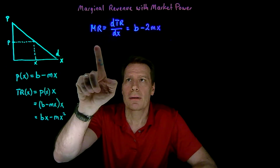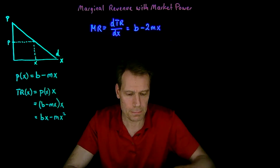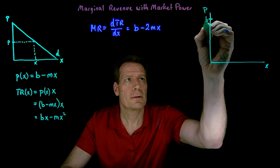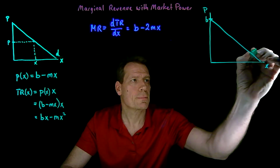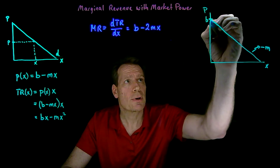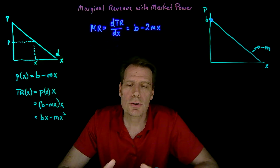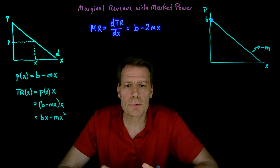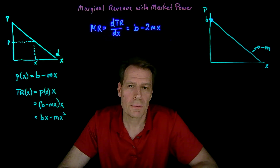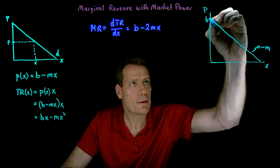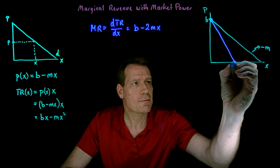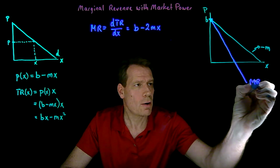We can now put the marginal revenue curve on the same picture as the demand curve. The demand curve has an intercept of b and a slope of minus m. The marginal revenue curve also has an intercept of b, so it starts at the same point as the demand curve — and that makes intuitive sense, since the additional revenue from producing the first unit equals what the demand curve says you can sell it for. But the marginal revenue curve has twice the slope of the demand curve, meaning it intersects the horizontal axis at half the distance, and after that it becomes negative.